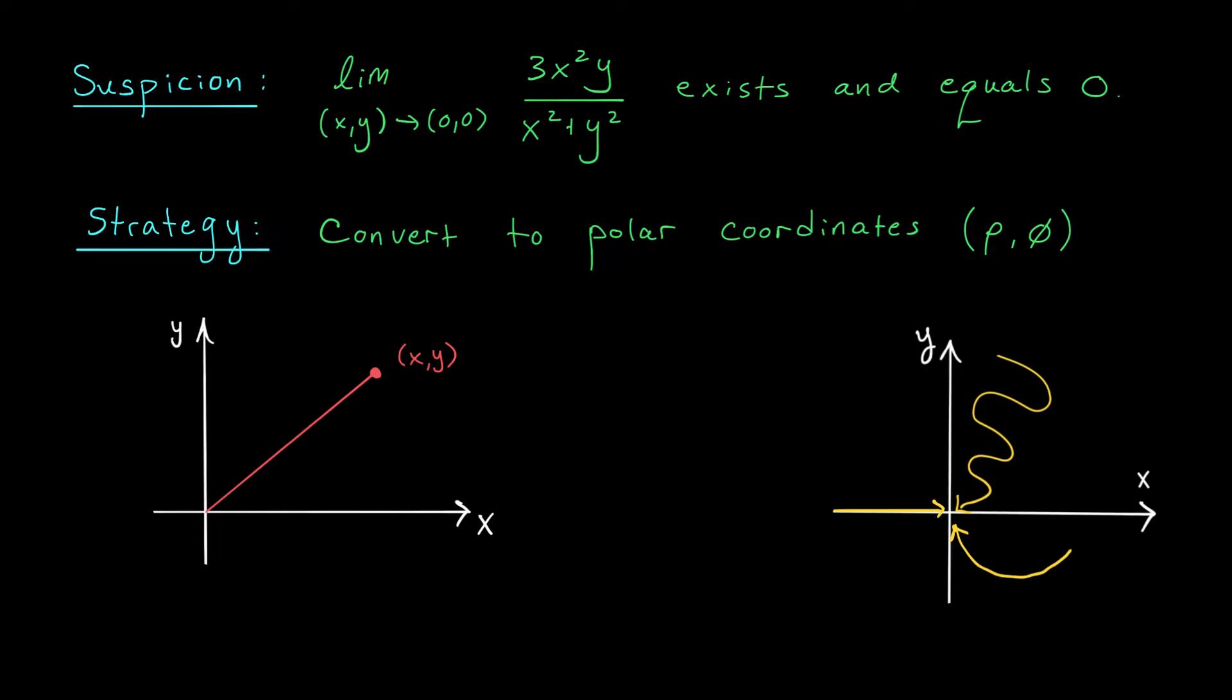So we're all familiar with representing a point in space using Cartesian coordinates x, y, right? Starting at the origin, x tells us how far to move left or right, and y tells us how far to move up or down. Makes sense, doesn't it? But it turns out we can represent this exact same point using two other quantities. The first is the distance from our point (x,y) to the origin. It's the length of this line segment right here. We denote this length by ρ.